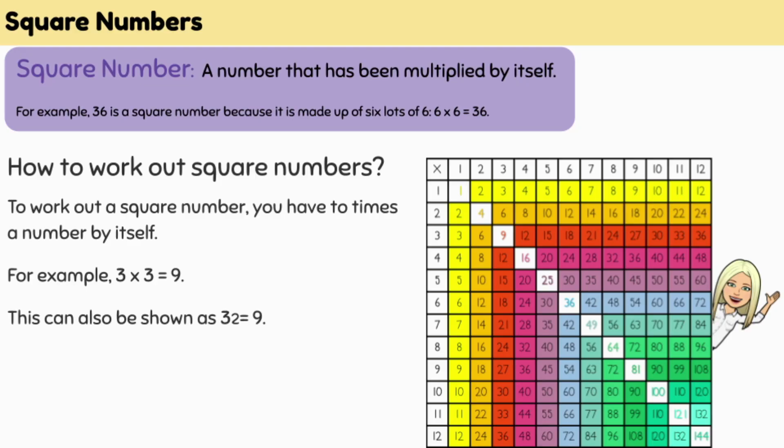Square numbers are numbers that have been multiplied by themselves. For example, 36 is a square number because it's made up of 6 lots of 6. 6 times 6 equals 36.